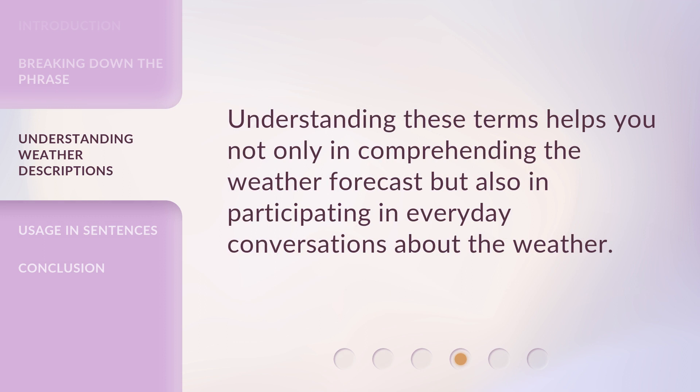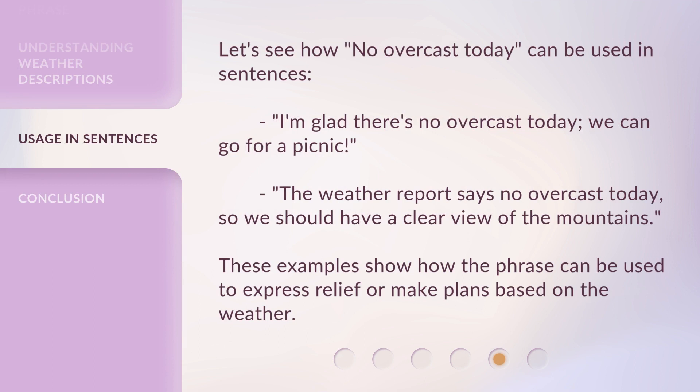Understanding these terms helps you not only in comprehending the weather forecast, but also in participating in everyday conversations about the weather. Let's see how No Overcast Today can be used in sentences. 'I'm glad there's no overcast today, we can go for a picnic.' 'The weather report says no overcast today, so we should have a clear view of the mountains.' These examples show how the phrase can be used to express relief or make plans based on the weather.